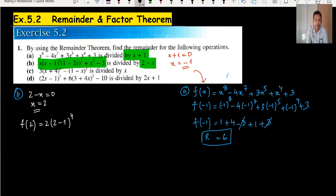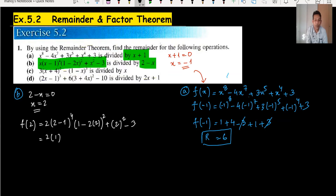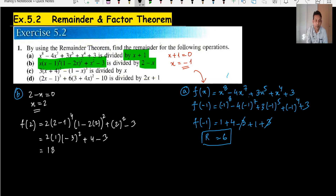Substituting x = 2: we compute (2 times 2 minus 1)^4 minus 2 times (2)^2 plus 2^2 minus 3. That gives (1)^4 = 1, minus 4 times minus 3 squared = 9, so 1 plus 18 = 19.